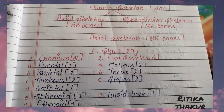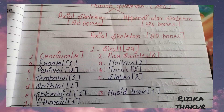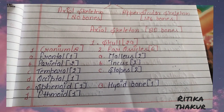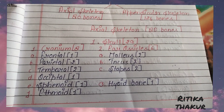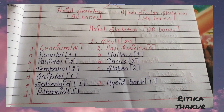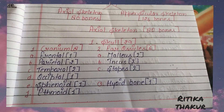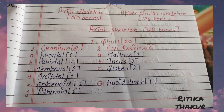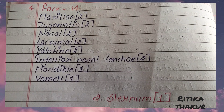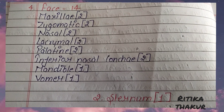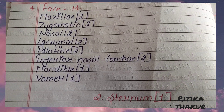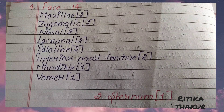Ear ossicles 6: Malleus 2, Incus 2, Stapes 2. Hyoid 1. Face bones 14: Nasal 2, Zygomatic 2, Nasal concha 2, Lacrimal 2, Palatine 2.